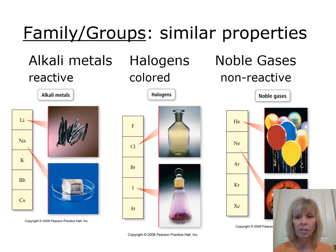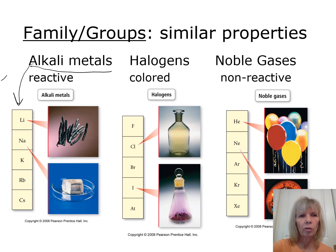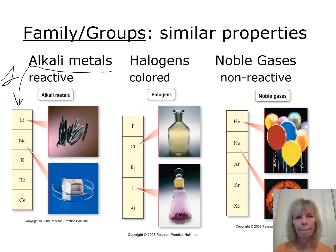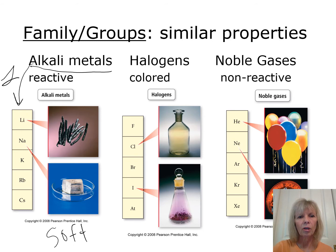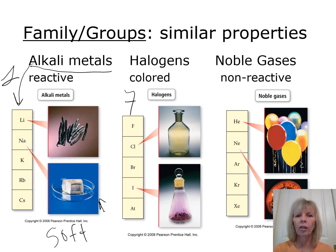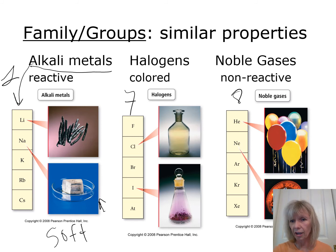Groups have similar properties. Alkali metals (column 1) are all very reactive — they react with water and must be stored under oil. They're soft enough to cut with a butter knife; pure sodium is a shiny silver metal. Halogens (column 7) are all colored — for example, iodine is purple and chlorine is a greenish-yellow gas. Noble gases (column 8) are non-reactive and exist as gases.